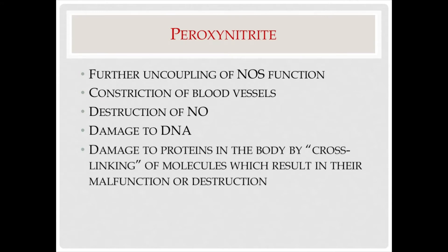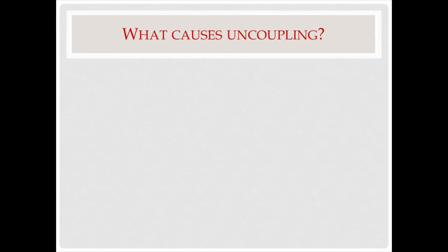Cross-linking is the process of connecting amino acids in a long line of proteins to other amino acids that were not supposed to be connected. This connection alters the shape of the protein and results in its malfunction or destruction. Because of the damaging effects of uncoupled reactions in the NOS enzyme, we want to make sure that these can be prevented.